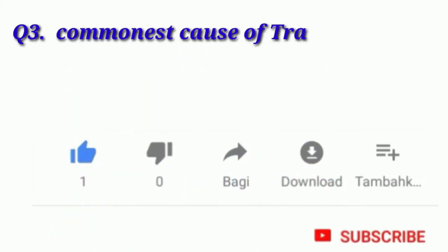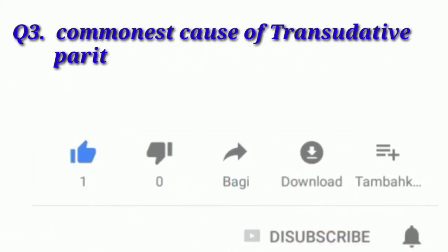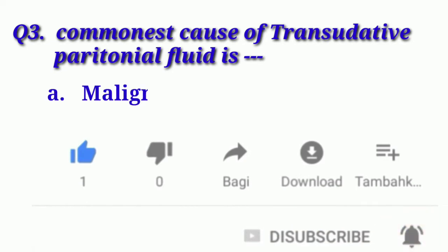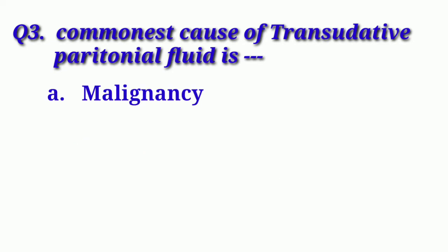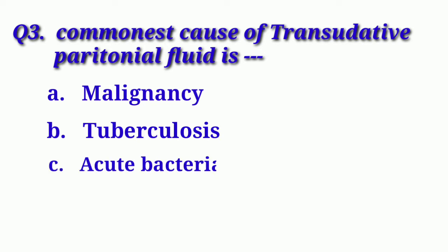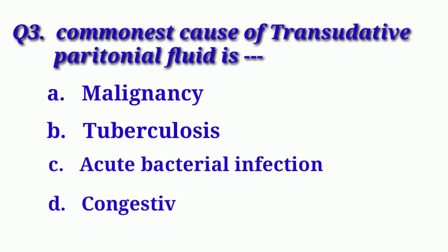Our next question is: The commonest cause of transudate peritoneal fluid is. Option A: Malignancy. Option B: Tuberculosis. Option C: Acute bacterial infection. And Option D: Congestive cardiac failure.